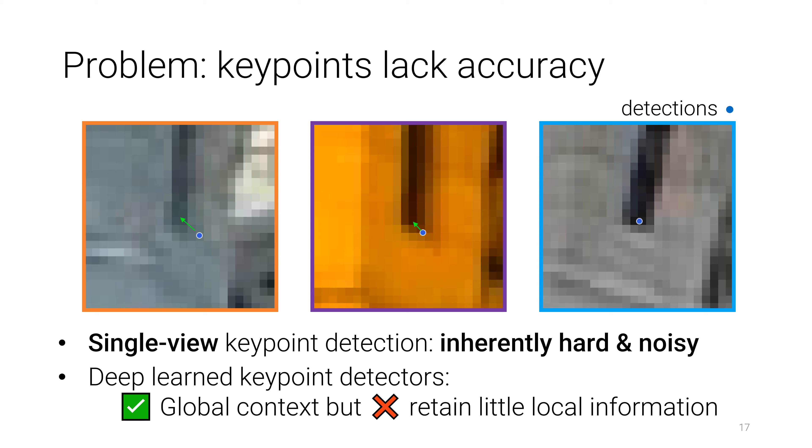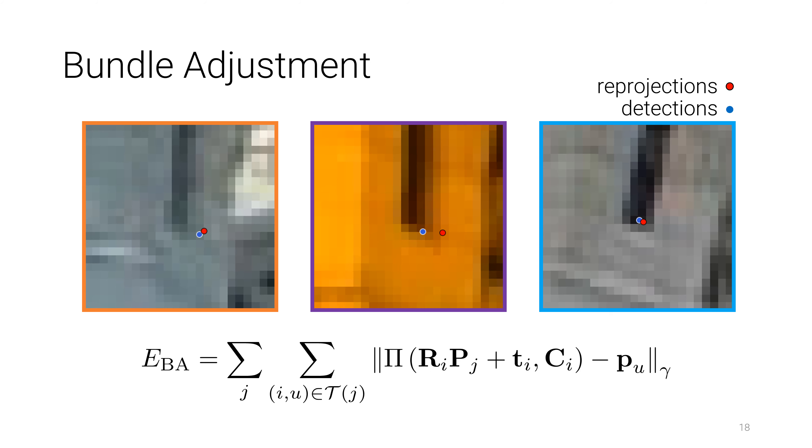This problem is compounded in recent learned feature detectors, which are designed to encode global context at a lower resolution. This noise has significant impact on the quality of the resulting 3D model, because standard SFM pipelines apply bundle adjustment with a geometric reprojection error.